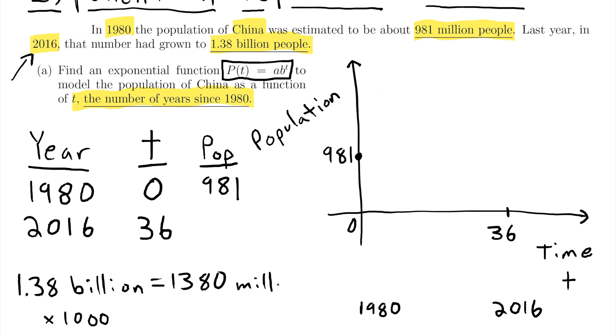It's really important to use the same units. We could have used billions, we could have used millions, we could have just written out all the zeros for both these numbers. But I think it's easiest and most convenient just to use the population in millions for this problem.